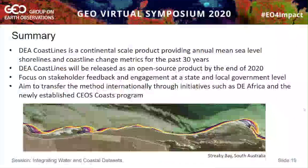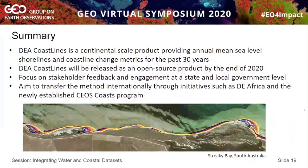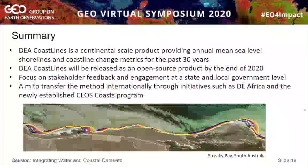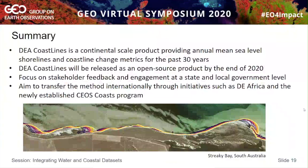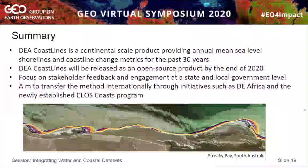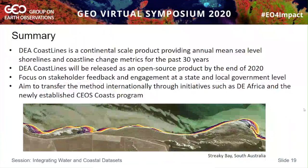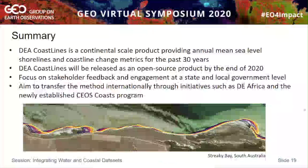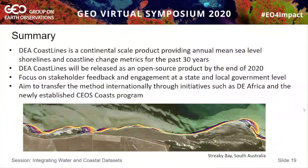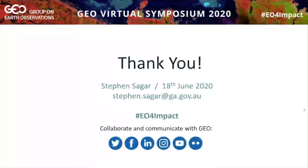In summary, DEA Coastlines is a continental-scale product for Australia providing annual mean sea level shorelines and coastal change metrics for the past 30 years. We're hoping to release this as an open source product, with code also available, by the end of 2020. Before release, we're focusing on stakeholder feedback and establishing a validation and engagement loop at the state and local level — the people at the coalface of dealing with these problems. We're also aiming to transfer the method internationally through initiatives such as Digital Earth Africa and the newly established Sea Health Coast program, looking to establish this methodology in other ODC implementations.